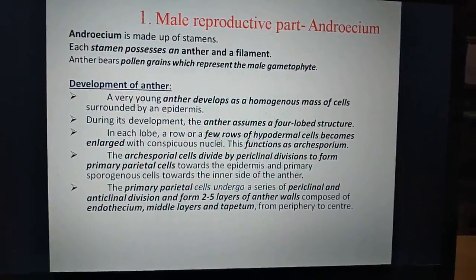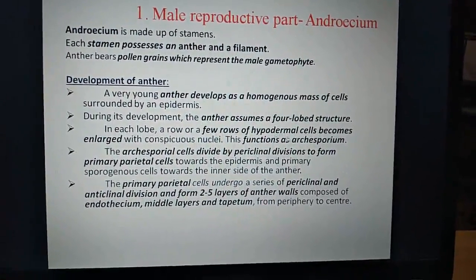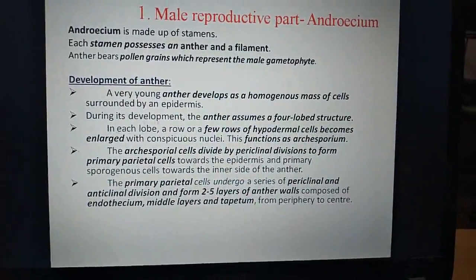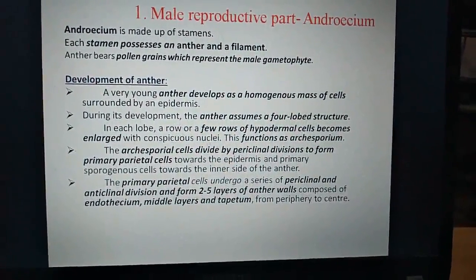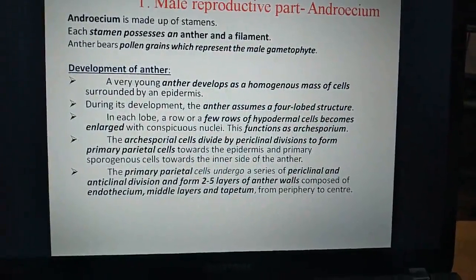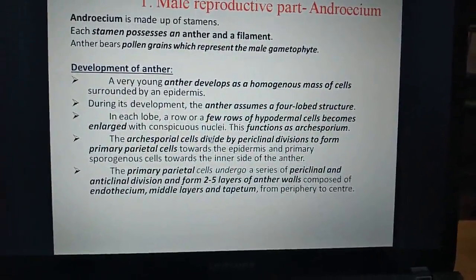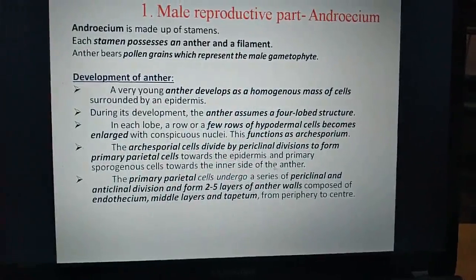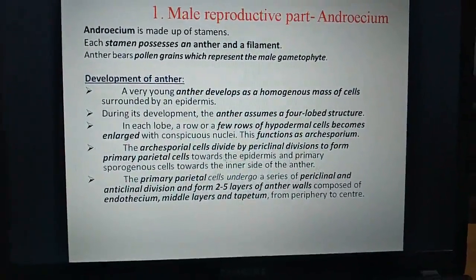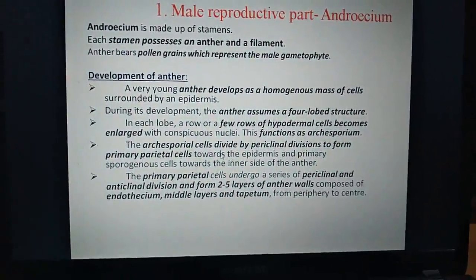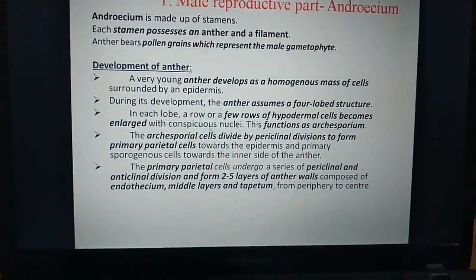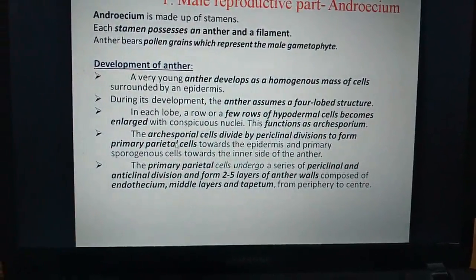During its development, the anther assumes a four-lobed structure. In each lobe, a row or few rows of hypodermal cells become enlarged with a conspicuous nucleus. This functions as the archesporium. The archesporial cells divide by periclinal divisions to form primary parietal cells.